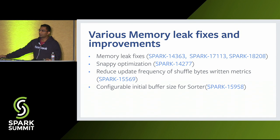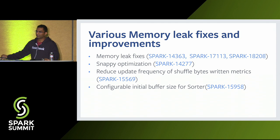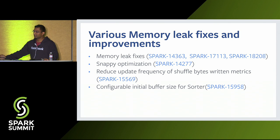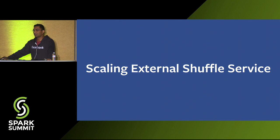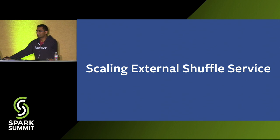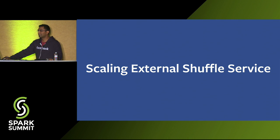Apart from this, we also made various memory leak fixes and improvements to the Spark executor — you can refer to the open-source Jira for more details. Lastly, let's talk about scaling the Spark external shuffle service. While running jobs that shuffle hundreds of terabytes of data, it's easy to see that the shuffle service becomes the bottleneck. We observed that our large jobs were spending as much as 50% of the time trying to read the shuffle file.